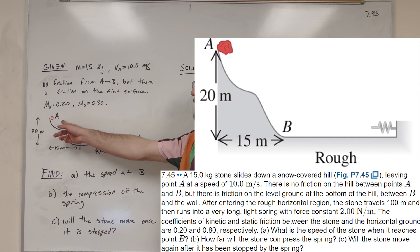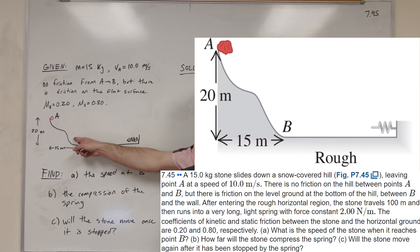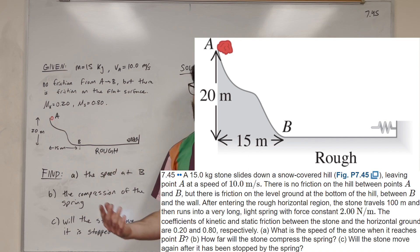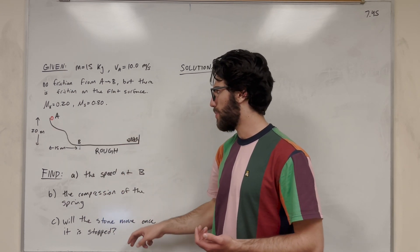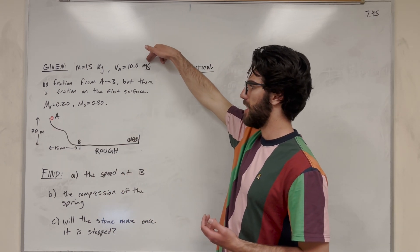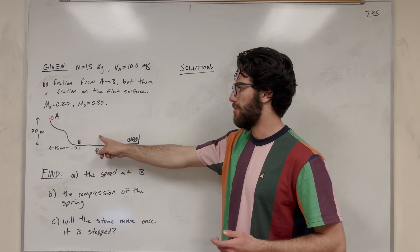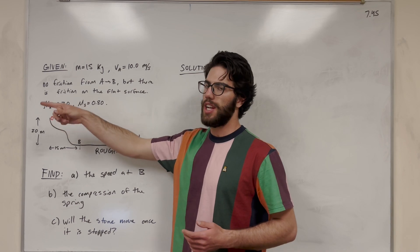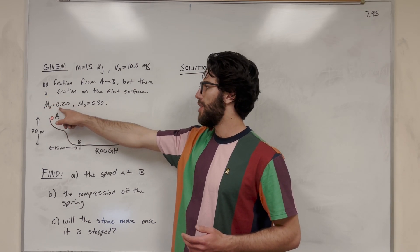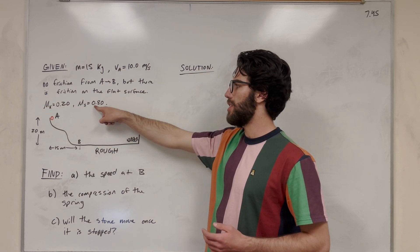We're given a rock starting at point A, going down a surface until it reaches point B. From A to B there's no friction on the rock, so it's going to pick up speed. It starts with an initial velocity of 10 meters per second. Then from B, it has a rough surface with a coefficient of kinetic friction of 0.2, and a coefficient of static friction of 0.8.